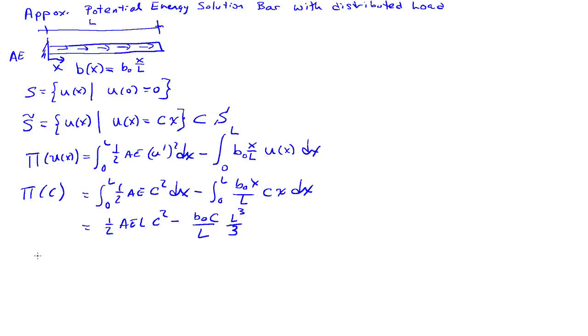So, and this must be stationary, so the derivative with respect to C equals 0, so that's for equilibrium. So I find AE L times C minus B0 L squared over 3 equals 0. So I can solve for C, so C then becomes B0 L over 3 AE.